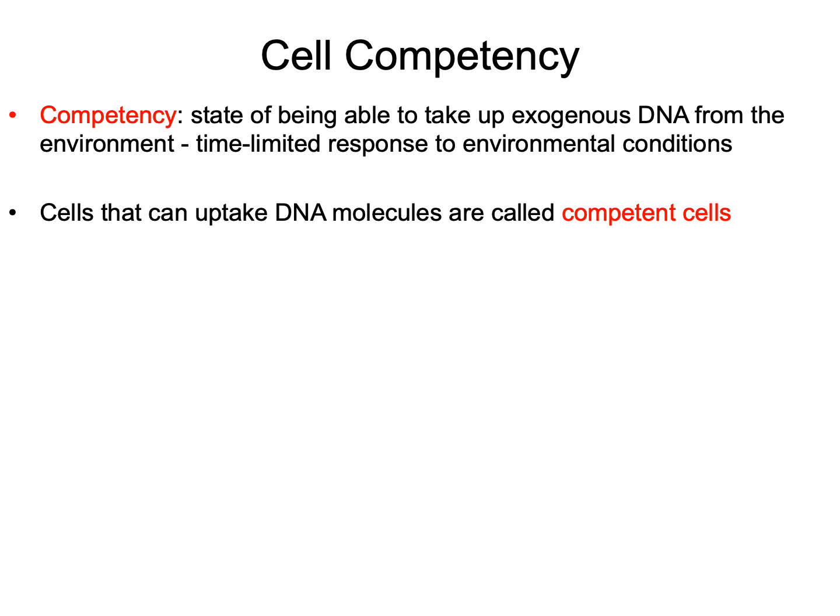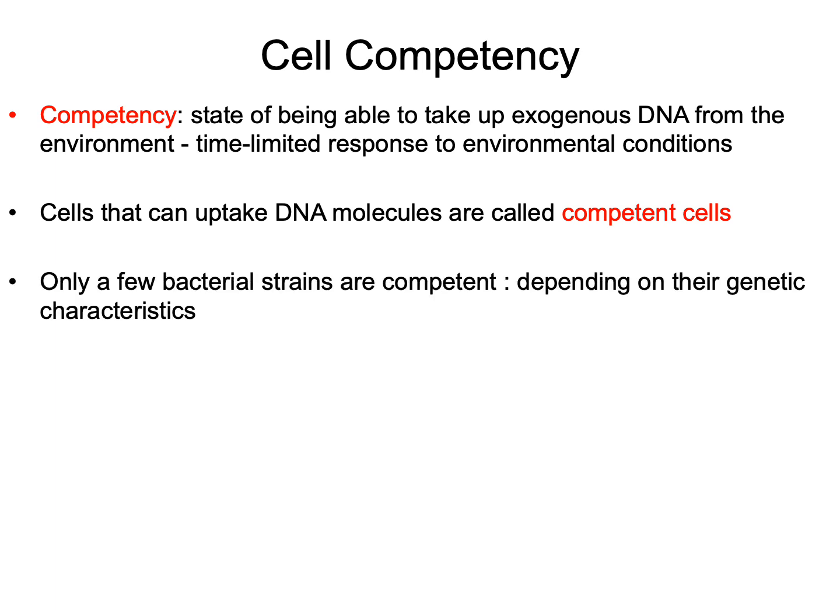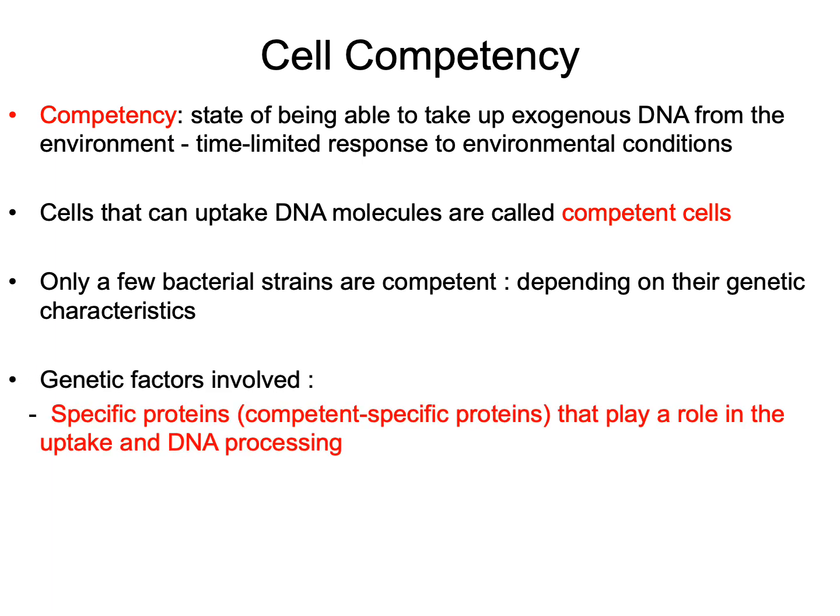When a cell is in a competent state, the cell is called a competent cell, and it can uptake free DNA molecules from its surroundings. Because this competent state is determined by genetic characteristics, only few bacterial strains are competent in nature. The genetic features include specific competent-specific proteins that play roles in DNA uptake and DNA processing.